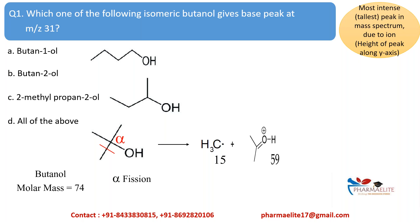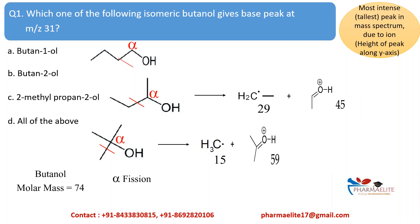Option B, butane-2-ol, is a secondary alcohol. Fragmentation from the alpha carbon will give a methyl radical with molar mass of 29, and the remaining part of the molecule will give a base peak at 45 — that is, 29 subtracted from 74. Option A, butane-1-ol, is a primary alcohol. Fragmentation from the alpha carbon will give a methyl radical with molar mass of 43, and the remaining part of the molecule will give a base peak at 31 — that is, 43 subtracted from 74.